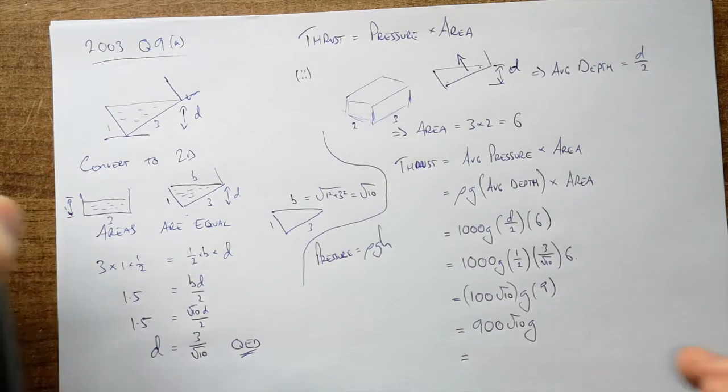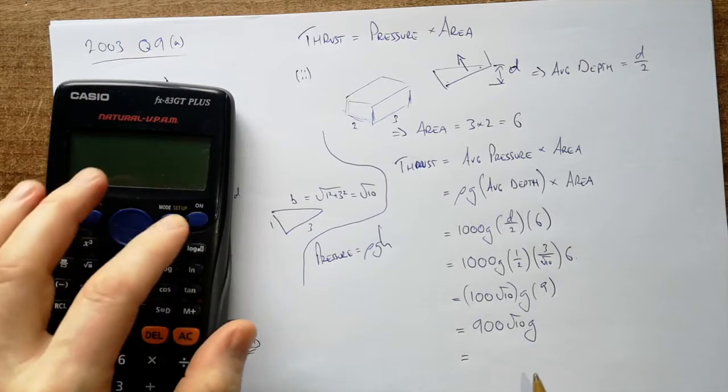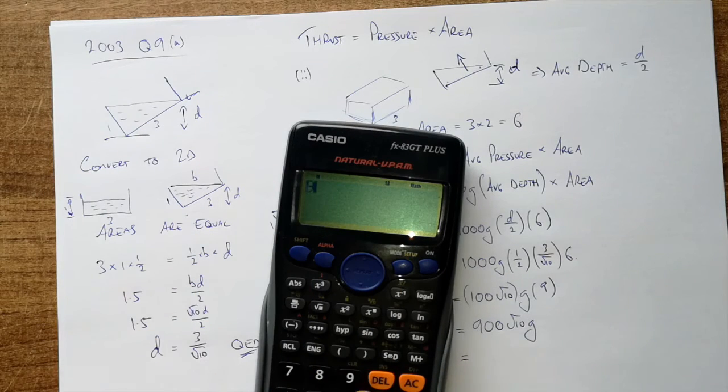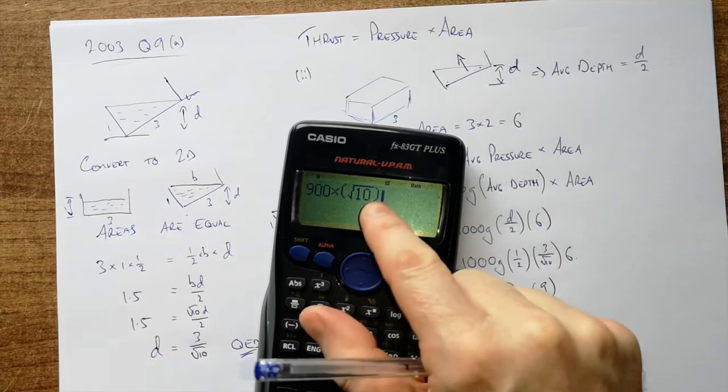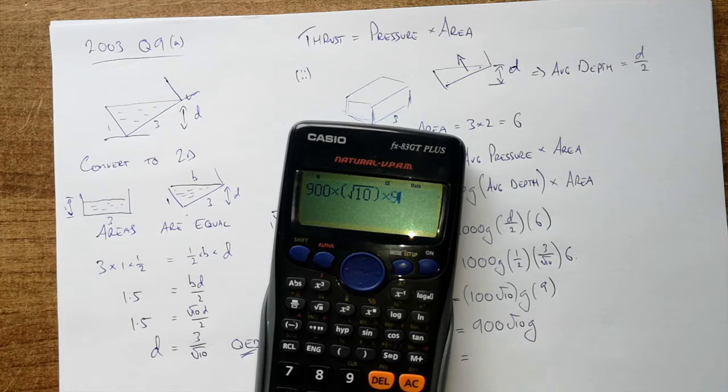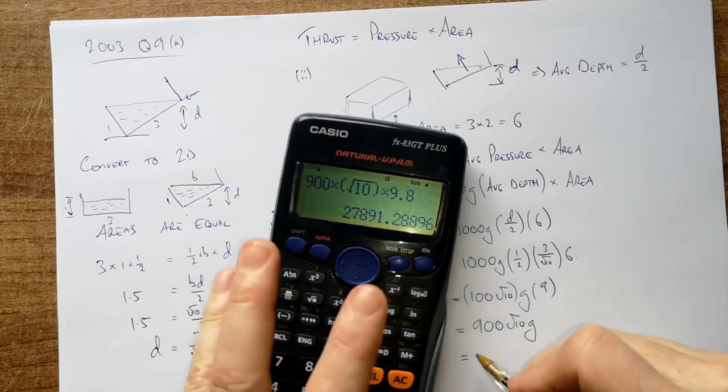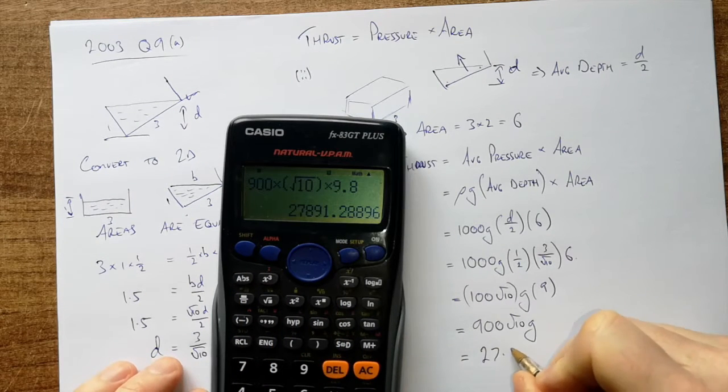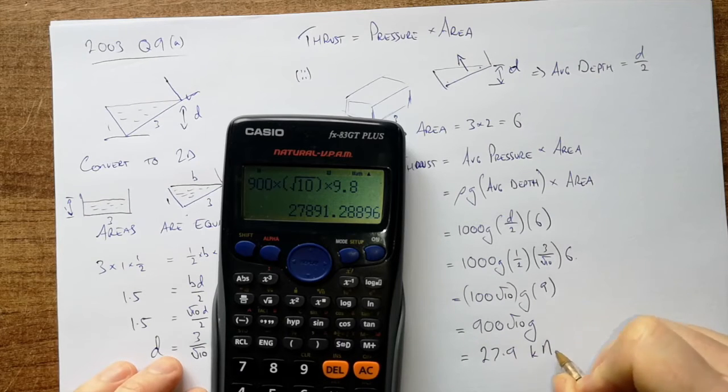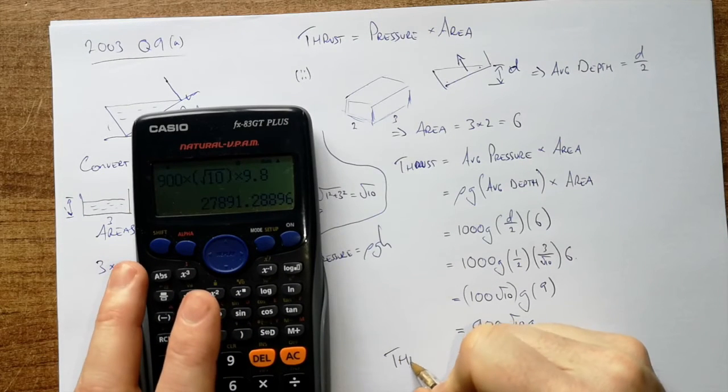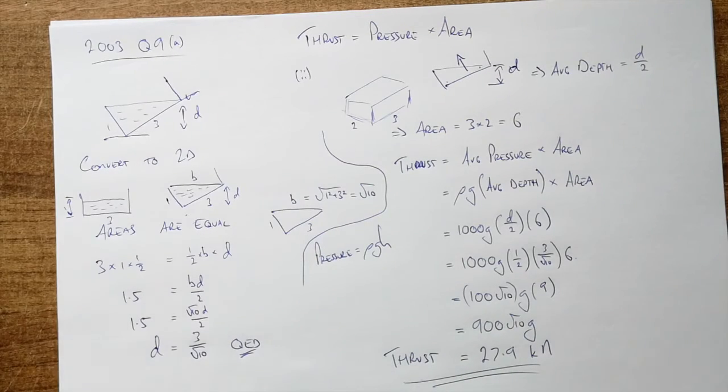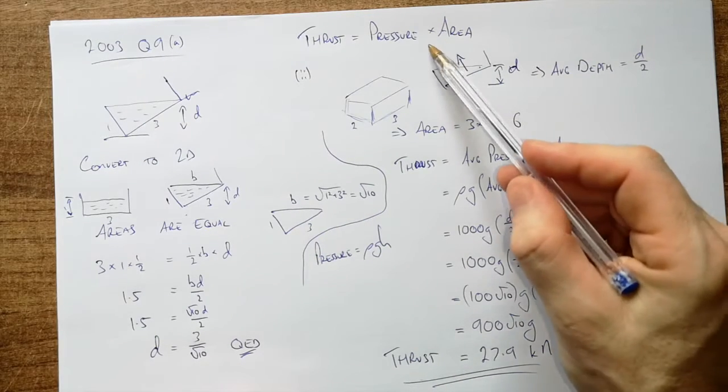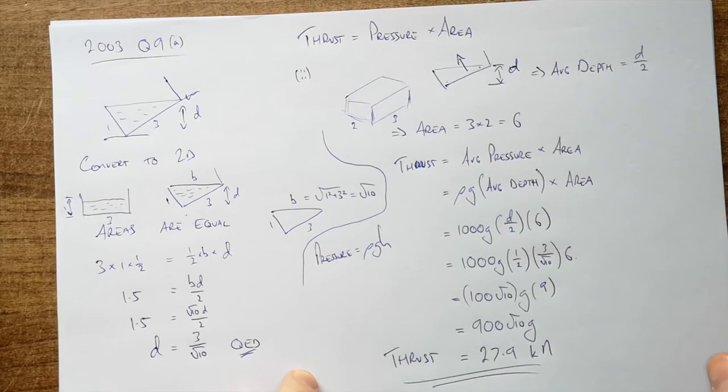We stick that into our calculator. So we have 900 by square root of 10, make sure you do that extra little one coming out there, so it's just the root of 10 by 9.8 and that is going to equal 27.9 kilonewtons because thrust is a force. And there we have part two. Not too bad once you understand thrust, it becomes a reasonably simple area volume question.